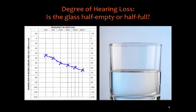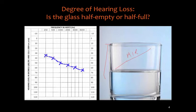Looking at the notion of degree of hearing loss, philosophically we could think of it as whether the glass is half empty or half full. When we look at the audiogram, if we look at this set of threshold findings — depicted here as blue Xs, which are air conduction threshold results for the left ear — we can see audiometric findings of 35 dB at 250 Hz, 40 at 500, 50 at 1,000, and so on. This would be the person's audiometric threshold.